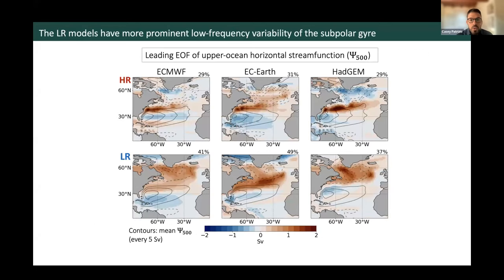All results I'll show are for seven-year low-pass filtered annual anomalies from the control runs, because we're interested in the low-frequency component of variability relevant to understanding the discrepancies between LR and HR models. Just to note, I haven't compared these simulated currents to observational estimates, primarily because there are limitations in the spatial and temporal coverage of ocean current observations, contributing to large uncertainty across ocean reanalyses.